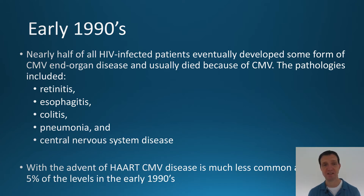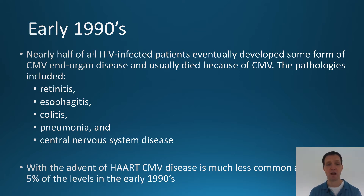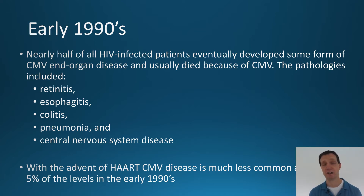The pathologies related to CMV include retinitis, esophagitis, colitis, pneumonia, and central nervous system disease, but in this episode we're only concentrating on retinitis. With the advent of highly active antiretroviral therapy — sometimes known as combination antiretroviral therapy — the same disease is now much less common, at around about five percent of the levels seen in the early 1990s.